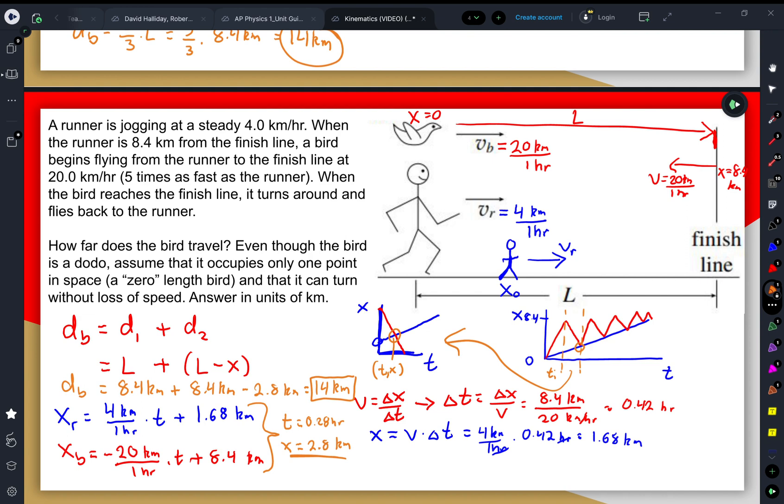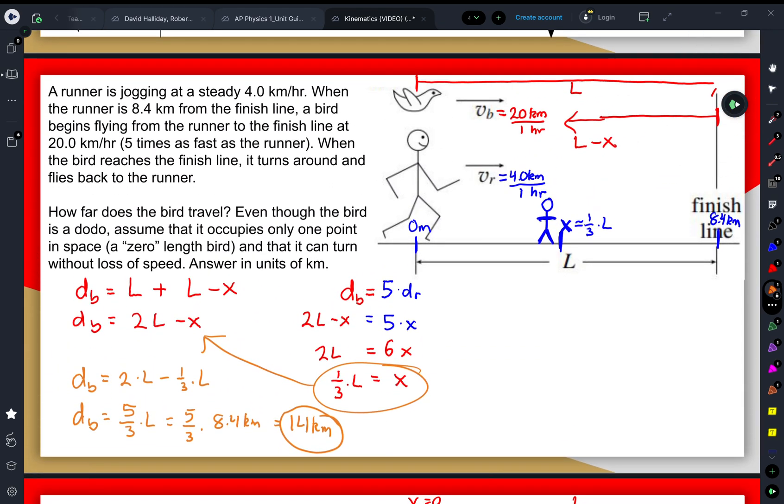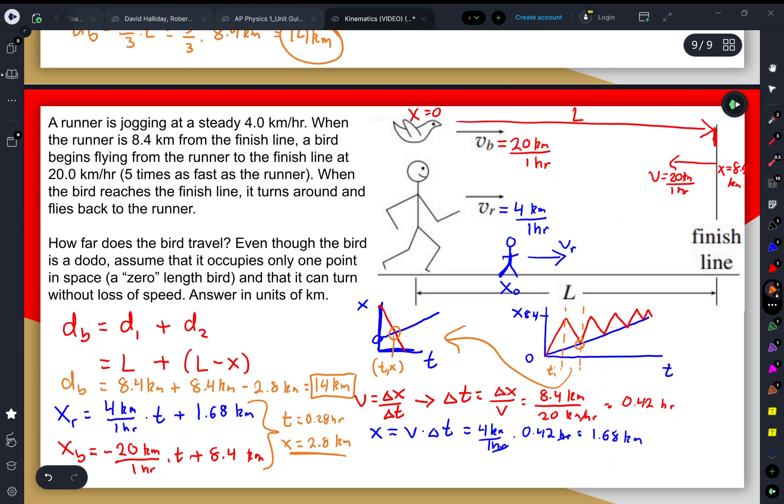This is another way of solving for how far the bird traveled. We saw the way in the previous video and in the previous example here about how we could solve it by just doing some algebra. But if we want to apply our kinematics and our position-time graphs, this would be an alternative way to do so.